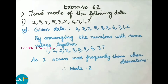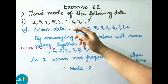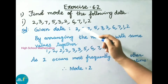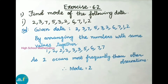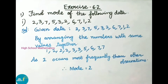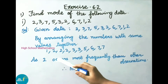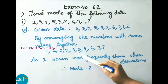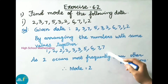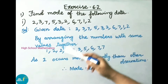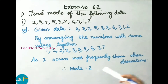Exercise 6.2, Question 1, part one: Find the mode of 2, 3, 7, 5, 3, 2, 6, 7, 1, 2. Arranging with same values together: 1 appears once, 2 appears 3 times, 3 appears 2 times, 5 appears once, 6 appears once, and 7 appears 2 times. Since 2 occurs most frequently, mode equals 2.